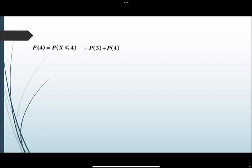F(4): وهي P(X ≤ 4)، وهي عبارة عن P(3) زائد P(4). P(3) من الجدول 0.5، و P(4) تساوي 0.3، الناتج سوف يكون 0.8.